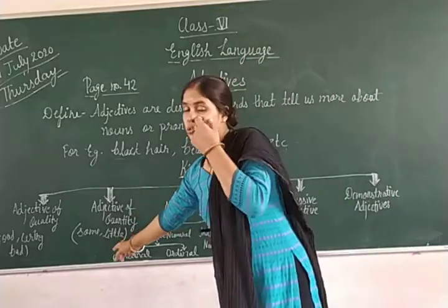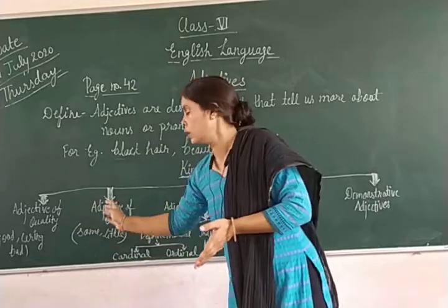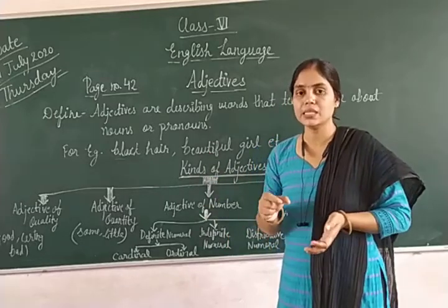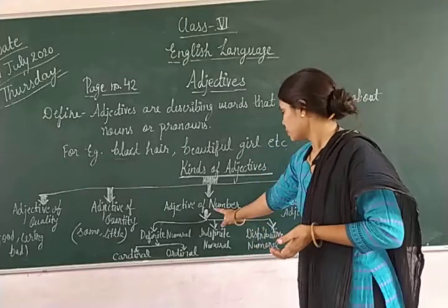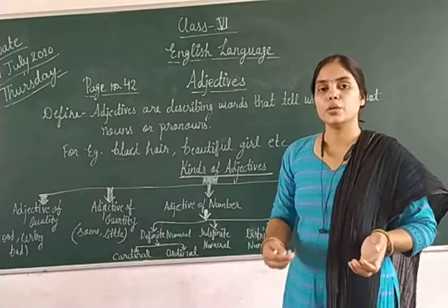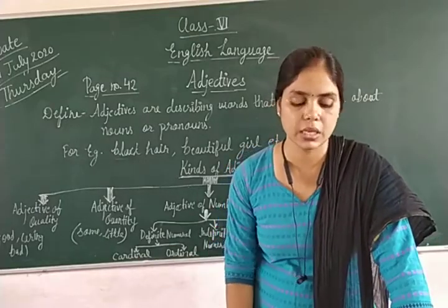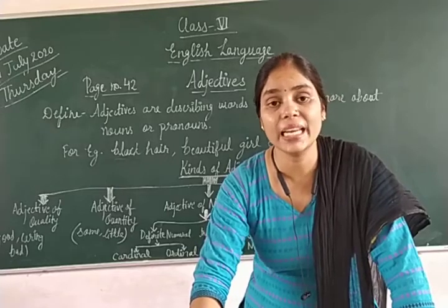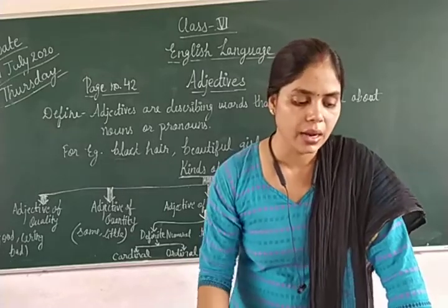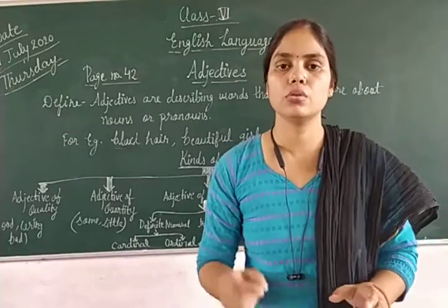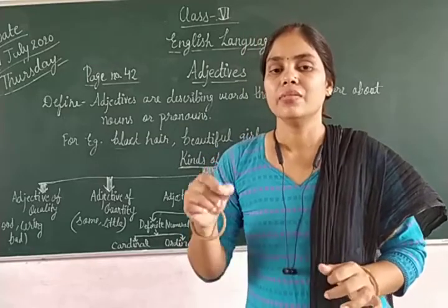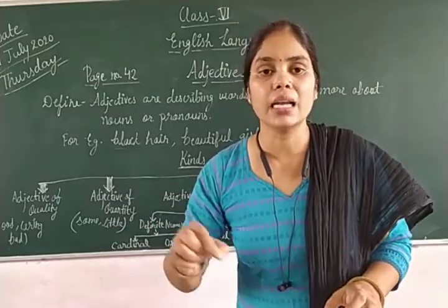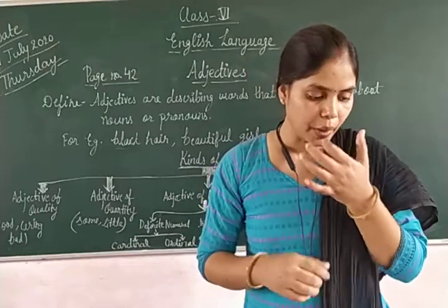Adjective of quantity is used with uncountable nouns — nouns which we cannot count. But adjective of number is used with nouns which can be counted, meaning countable nouns. You have to remember: adjective of quantity is used with uncountable nouns and adjective of number with countable nouns.